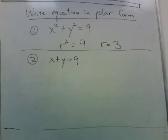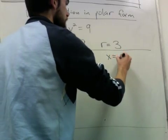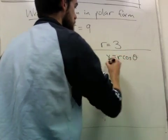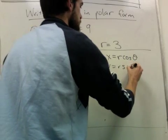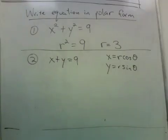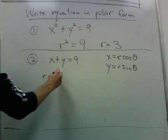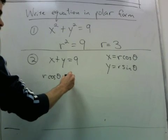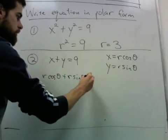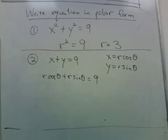Now let's try and see how we can write x plus y equals 9 in polar form. Again, we'll use the equations x equals r cosine theta, y equals r sine theta. And this is straightforward. We just write down what we have. And that gives the equation in polar form.